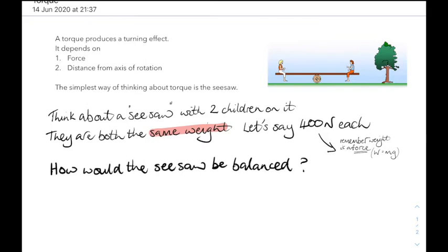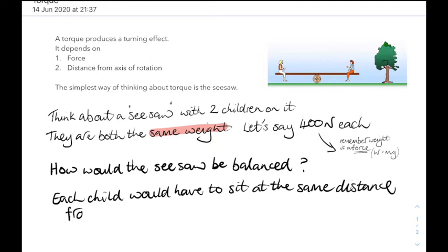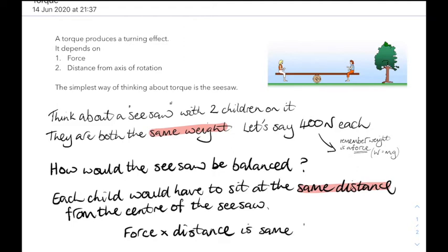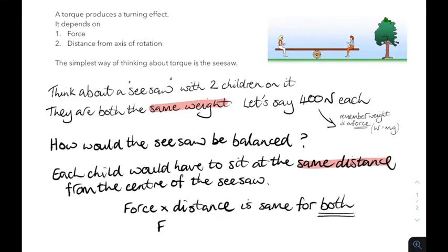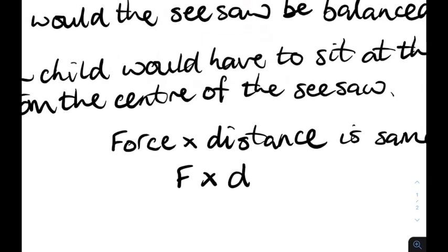Now, why is the seesaw balanced? It's because each kid exerts the same force downwards and they are at the same distance from the centre of the seesaw. The force is acting down. The distance is horizontally. So, the force and the distance are at right angles to each other. Force is in newtons and distance is in metres.